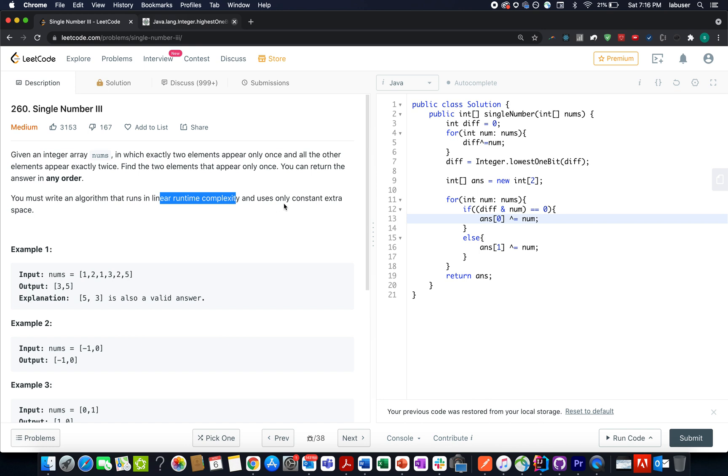Had this constant space constraint not been there, we could have counted the frequency and the question would have been really simple. We could have created a frequency map there. We could have used a set as well, but it would have added extra space to the complexity. That's why we can't go with that approach. Without much ado, let's look at the presentation that I have created for this.